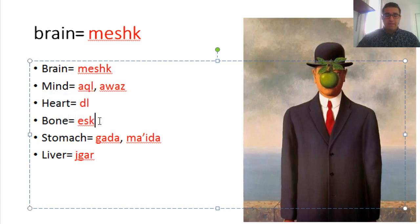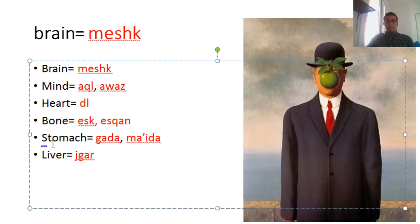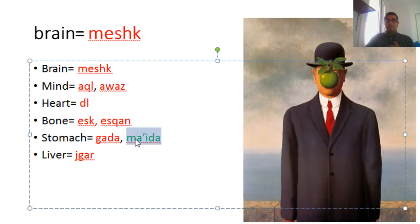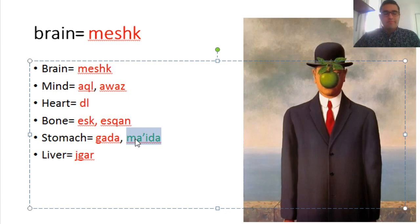Bone is isek. There's another word: esqan — esqan means bone. Stomach is gada, but we also have the Arabic word ma'ida. In colloquial Kurdish we usually say ma'ida, but in Kurdish writing or prose we use gada. Liver is jigar.